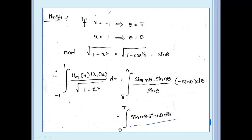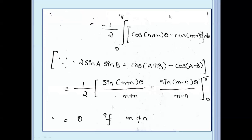After interchanging the limits, we get: integral from 0 to π of sin(mθ) times sin(nθ) dθ. Using the formula: minus 2 sin a sin b equal to cos(a+b) minus cos(a minus b), we write: minus 1 by 2 times integral from 0 to π of cos(m+n)θ minus cos(m minus n)θ dθ.